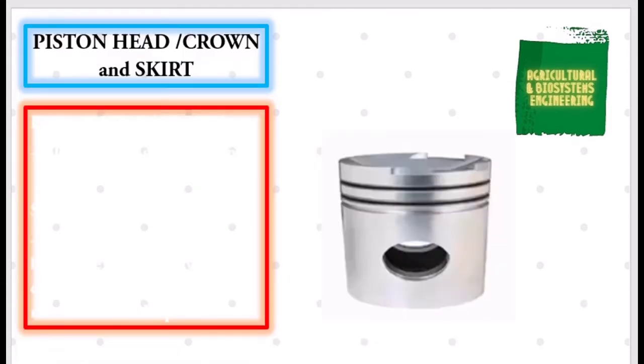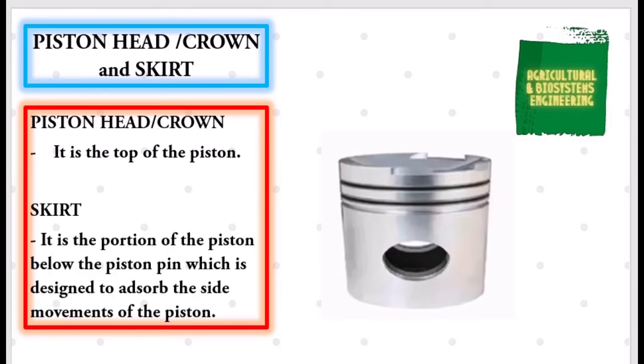Next, our piston head or crown and skirt. First, our piston head or crown—it is the top of the piston. Second, the skirt—it is the portion of the piston below the piston pin which is designed to absorb the side movements of the piston.